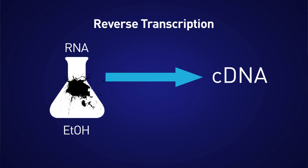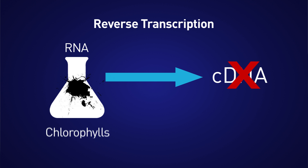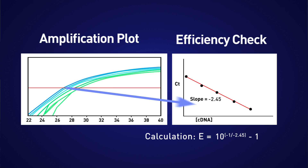Let's review some causes of high or low efficiency and how to fix them. The most common cause of efficiencies greater than 100% are inhibitors. This can be carryover from the sample itself, such as heparin or humic acids, or contaminants from the RNA or DNA isolation, such as SDS or phenol. Inhibition means that even as you add more template, the CT value does not shift to earlier cycles as you would expect. This flattens out the efficiency plot, resulting in a lower slope and thus efficiency over 100%.